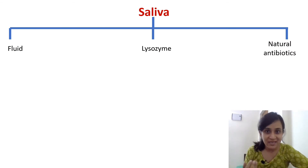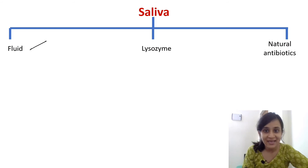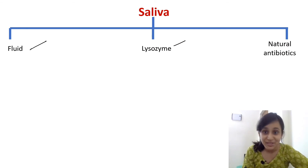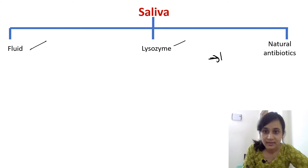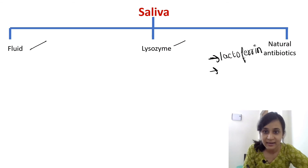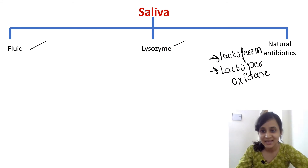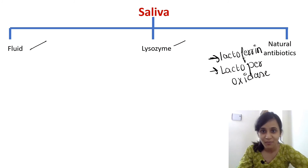Saliva: the continuous flow of saliva in our mouth prevents pathogens from colonization. Saliva also contains lysozyme that kills bacteria. Saliva is a natural antibacterial agent; human saliva contains natural antibacterial agents like lactoferrin and lactoperoxidase. These natural antibiotics can block the development of an infection.